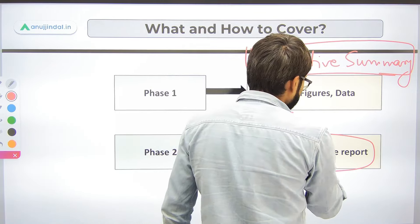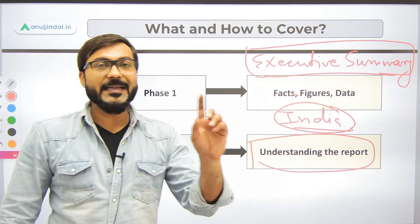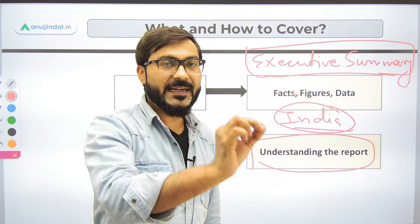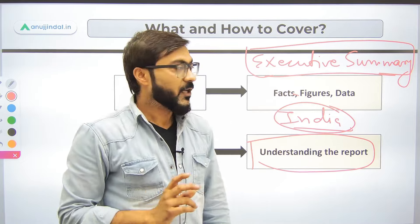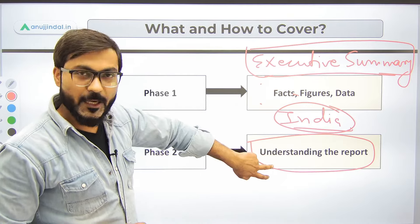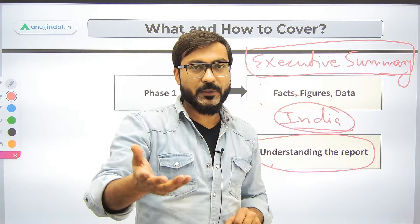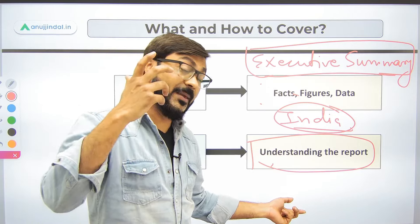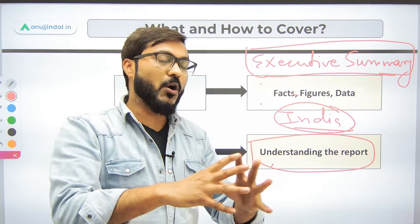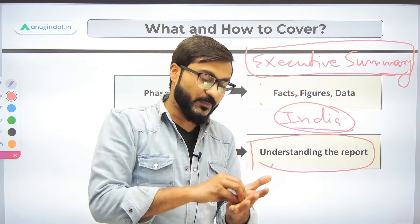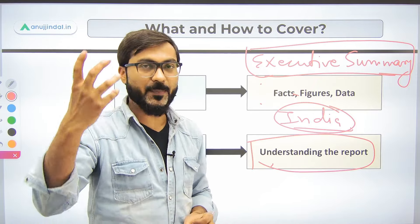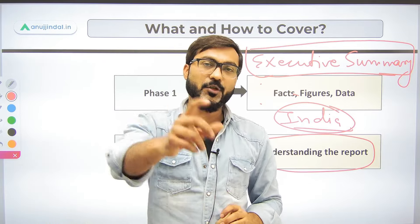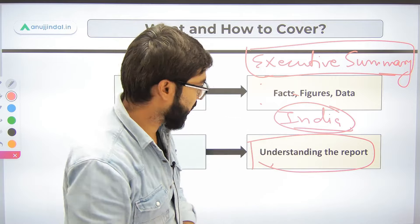In every report, search for 'India' using Ctrl+F and you will get every piece of information related to India provided in that report. These two aspects — executive summary and India-specific content — have to be covered in all reports. For enrolled students, we will very soon provide a comprehensive document covering all major reports from international organizations, covering both Phase 1 and the descriptive portion.